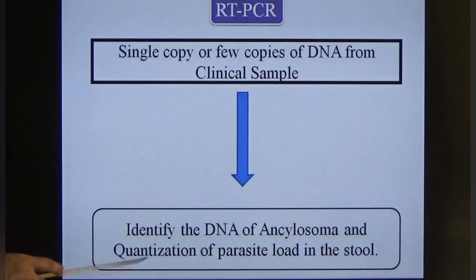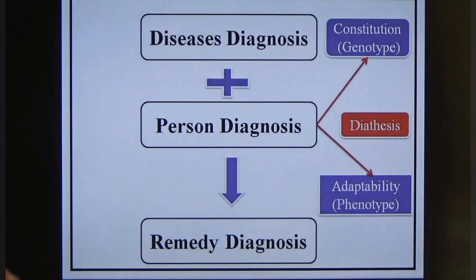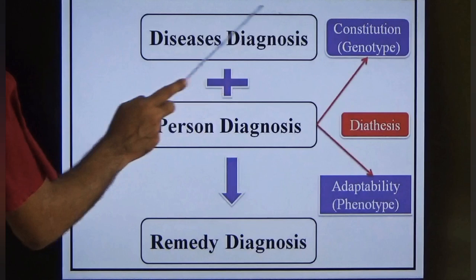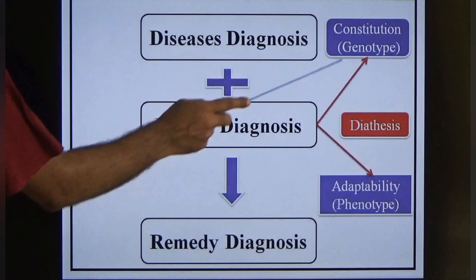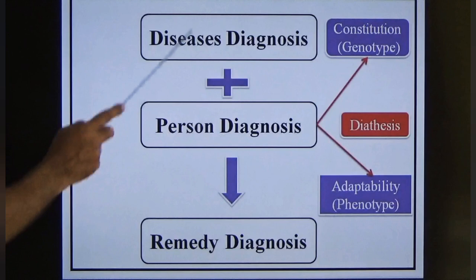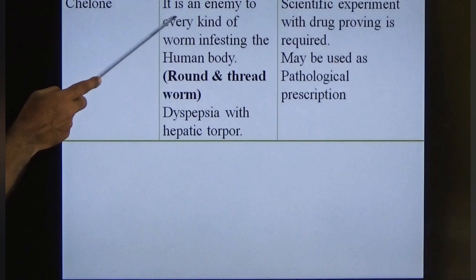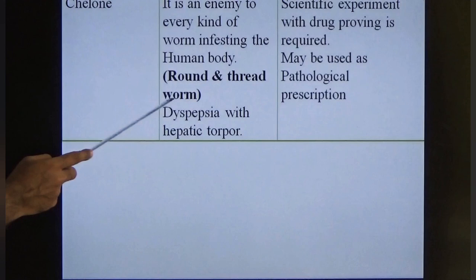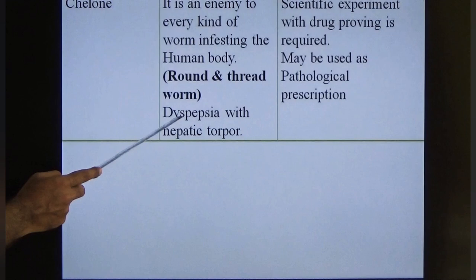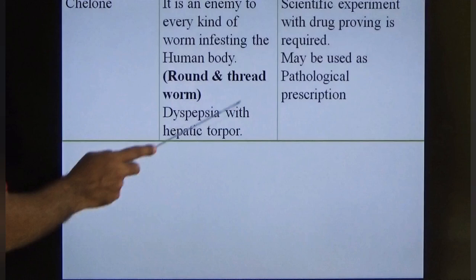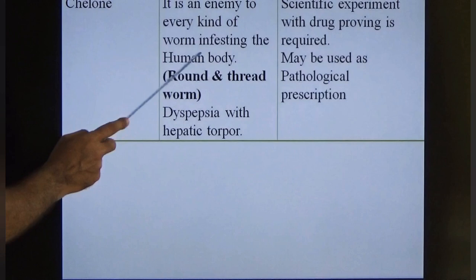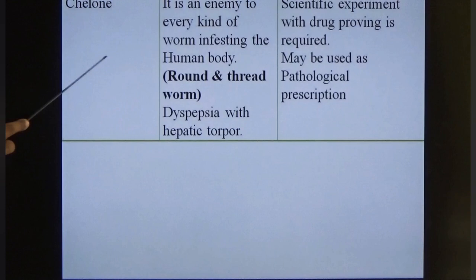Homeopathic management requires disease diagnosis, personal diagnosis, and remedy diagnosis. Prescribing on disease symptoms alone is a pathological prescription; combined with constitutional diagnosis it is a homeopathic prescription. Cina is an enemy to every kind of worm infecting the human body, especially round and thread worms, with symptoms of dyspepsia and hepatic torpor. Drug proving is required for complete symptom picture.